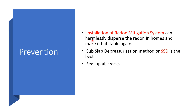Part of prevention is the installation of a radon mitigation system. This is approved by health authorities in many countries. Installation of a radon mitigation system can harmlessly disperse radon in our homes and make them habitable again. You can use the subslab depressurization method, simply called SSD — that is the best method. Also, seal up all cracks in your home, particularly in the basement floor.